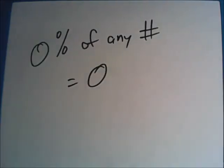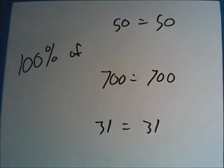Here are a few that tripped people up. So I decided to include them in this video. 0% of any number is always going to be 0. Because if you have 0% of it, you have nothing. And the other tricky one is if you have 100% of some number. This is always going to be that number. So if you have 100% of 50, you have 50. 100% of 700 is 700. And if you have all 100% of 31, then you have 31. Don't let these trip you up.